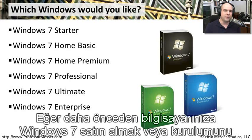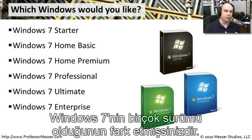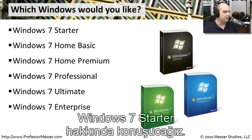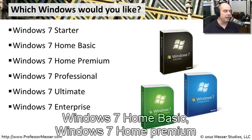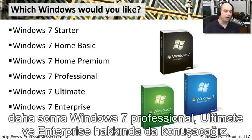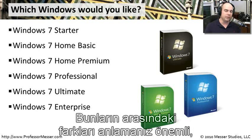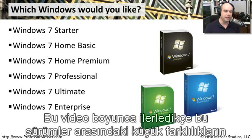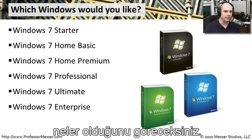If you've ever thought about buying or installing Windows 7 you may have noticed there were many different editions. We're going to talk about each one: Windows 7 Starter, Home Basic, Home Premium, Professional, Ultimate, and Enterprise. It's important to understand the differences because in different environments you may have different requirements, and each edition is a little bit different from the others.